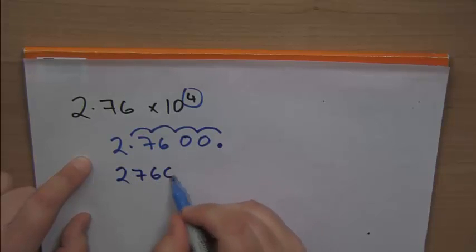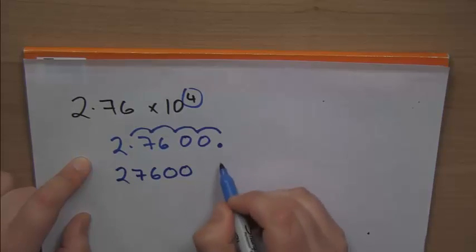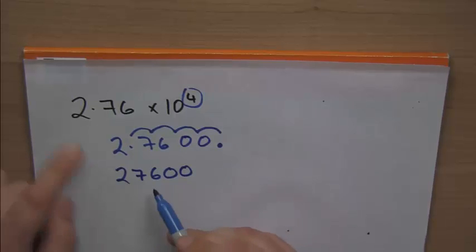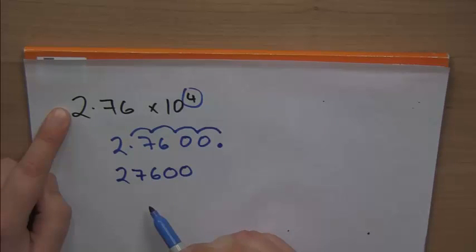And then let's just tidy this up, let's rewrite this number so it's a lot neater. So we've got 27,600, and we don't need the decimal point on the end. So this number here, 2.76 times 10 to the 4, is actually 27,600.